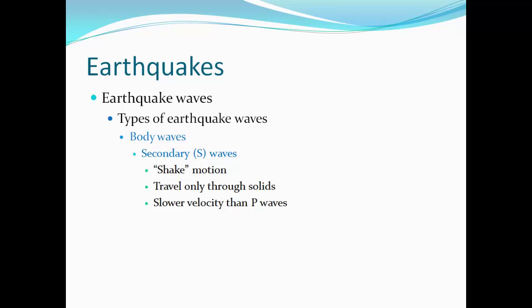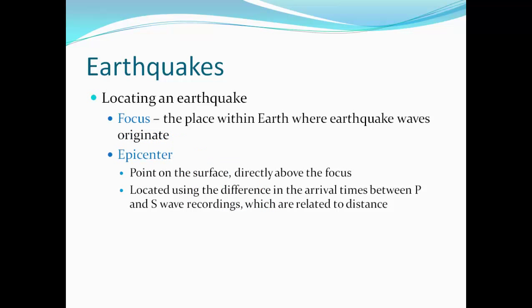S waves, or secondary waves, are also body waves. They have a shaking motion and travel only through solids at a slower velocity than P waves. They shake side to side, like a side-winding snake.